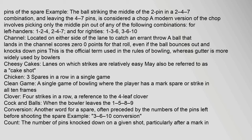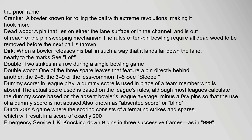Conversion: another word for spare, often preceded by the numbers of the pins left before shooting. Count: the number of pins knocked down on a given shot, particularly after a mark in the prior frame. Cranker: a bowler known for rolling the ball with extreme revolutions, making it hook more. Dead wood: a pin that lies on the lane surface or in the channel and is out of reach of the pin-sweeping mechanism; the rules of 10-pin bowling require all dead wood to be removed before the next ball is thrown. Dirk: when a bowler releases his ball so that it lands far down the lane, nearly to the marks. Double: two strikes in a row during a single bowling game.